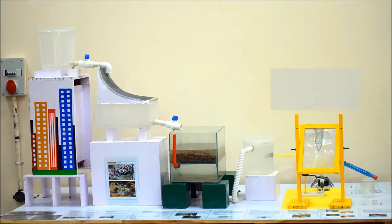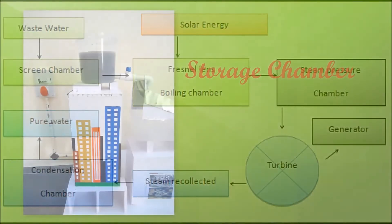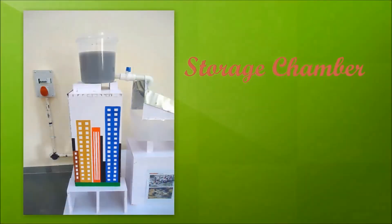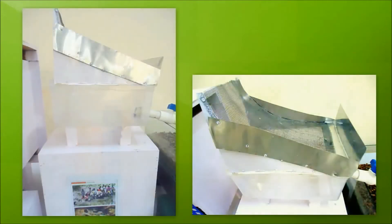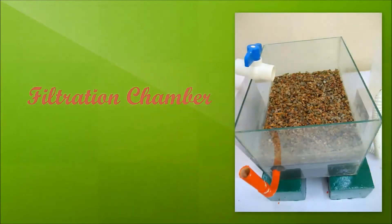This is the basic layout of our designed project. Wastewater is collected from different sources of a city at one place. It's then sent to a screening chamber having different size screen meshes so that large size particles are separated out. The wastewater is then passed through a chamber containing different grades of aggregates so that sand particles and small size particles get separated.